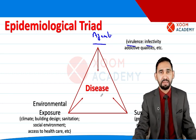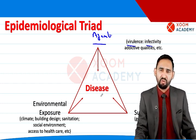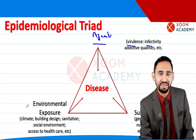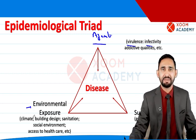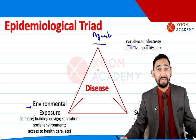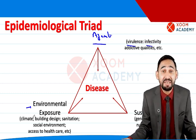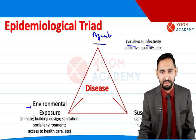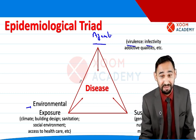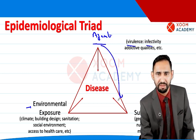If the host is susceptible — has poor nutritional status, a genetic problem, or genetic diseases — the host is vulnerable and at higher risk. There is also environmental exposure: extreme weather, building designs, sanitation, social environment, and poor access to healthcare. If agent, host, and environment are all present, they can't cause disease alone — there must be interaction: the agent invades the host.